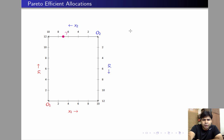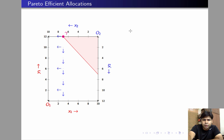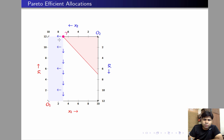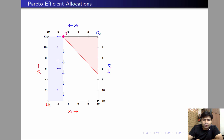Let us pick a point on the horizontal axis of individual 2 such as gamma. If we plot the indifference curve of individual 1, these are the points strictly preferred by individual 1 over gamma, and these are the points strictly preferred by individual 2 over gamma. So clearly, if we want to make individual 1 better off we'll have to move into that region, but doing so will make individual 2 worse off. If we want to make individual 2 better off we'll have to move into his preferred region, but then individual 1 ends up on a lower IC. So there is no way to improve one individual's satisfaction without reducing the other's — gamma is efficient.